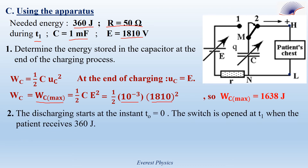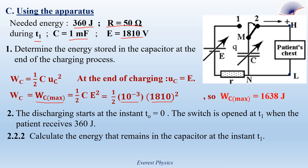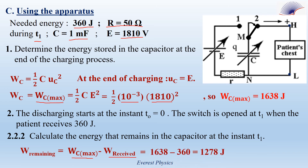Part 2: The discharging starts at T0 = 0. The switch is opened at T1 when the patient has received 360 joules. Calculate the energy remaining in the capacitor at T1. The remaining energy equals the initial energy minus the energy received by the patient: W_remaining = 1638 − 360 = 1278 joules.